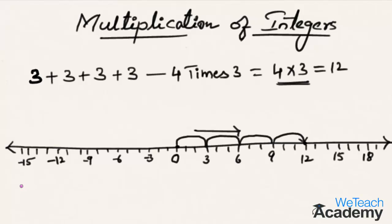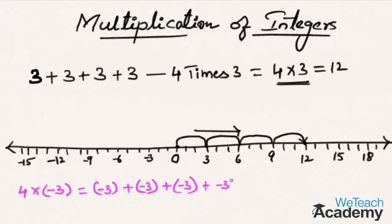Now let's discuss what is 4 times minus 3, which is nothing but minus 3 plus minus 3 plus minus 3 plus minus 3 — that is, we are repeatedly adding minus 3, four times. On the number line, this can be seen as 4 jumps each of 3 steps from 0 towards the left. Jumping 4 times each of 3 steps, we reach minus 12. Hence, 4 times minus 3 is minus 12.